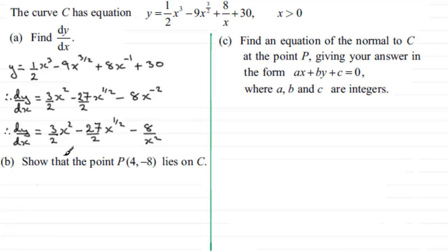For part B, we need to show that the point P with coordinates (4, -8) lies on curve C. To do this, substitute x = 4 into the equation, and hopefully we'll find that y equals -8.